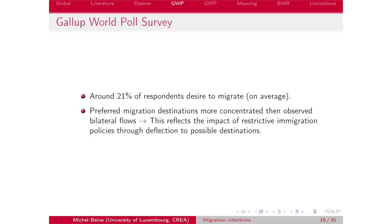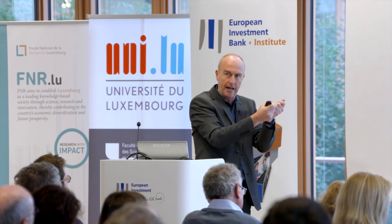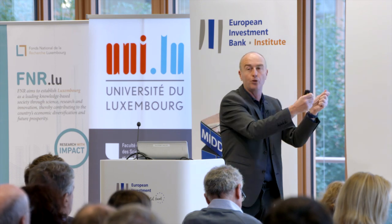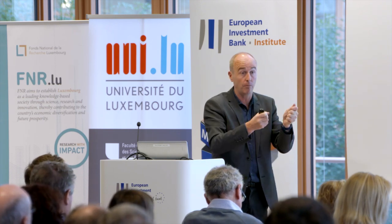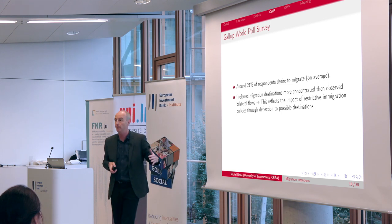What we observe in the Gallup data is that the preferred migration destination — where people say they would like to go, such as the US or Australia — is even more concentrated than the actual destinations I showed earlier. So it's already a good indication that people would like to go to some destinations but can't, perhaps because of immigration policies. The fact that preferred migration destinations are more concentrated than observed bilateral flows may reflect the impact of restrictive immigration policies.